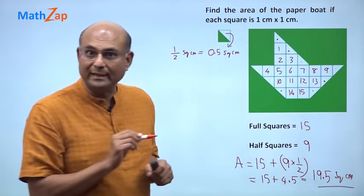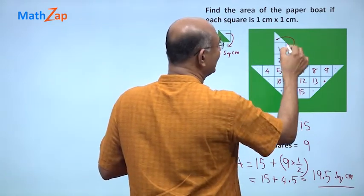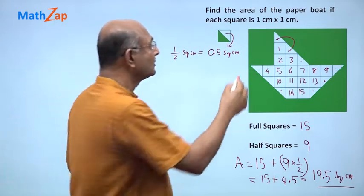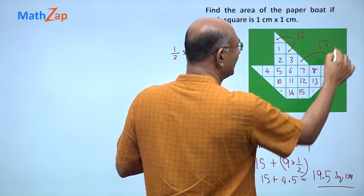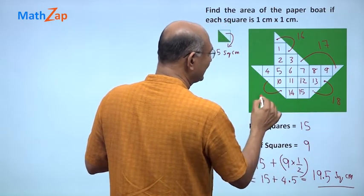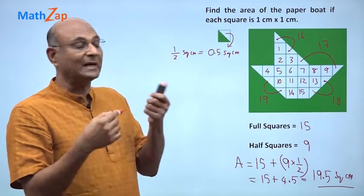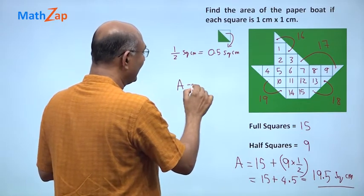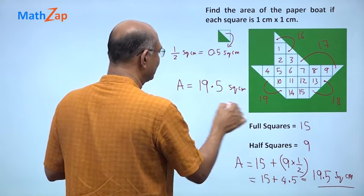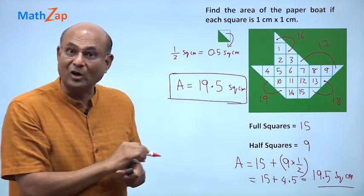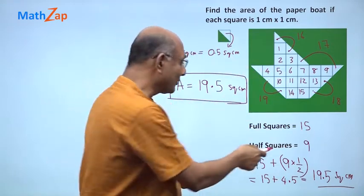But you can also do something else. You can say these two areas — half and half — what is half plus half? One. So pair them up: up to here I had 15, this pair is 16, these two areas 17, these two areas 18, these two areas 19, and then there is one more left, so that is half. Therefore, the area is 19 and a half, which is 19.5 square centimeters.